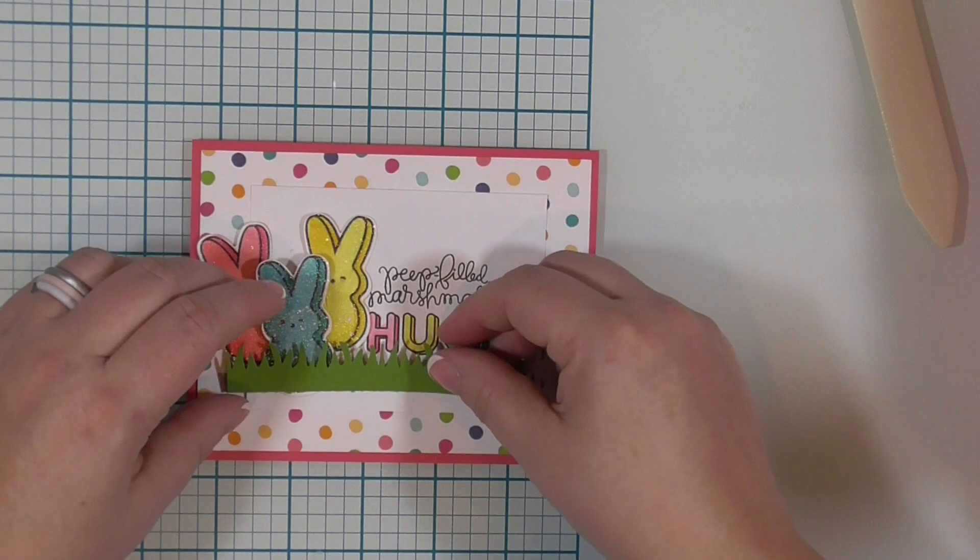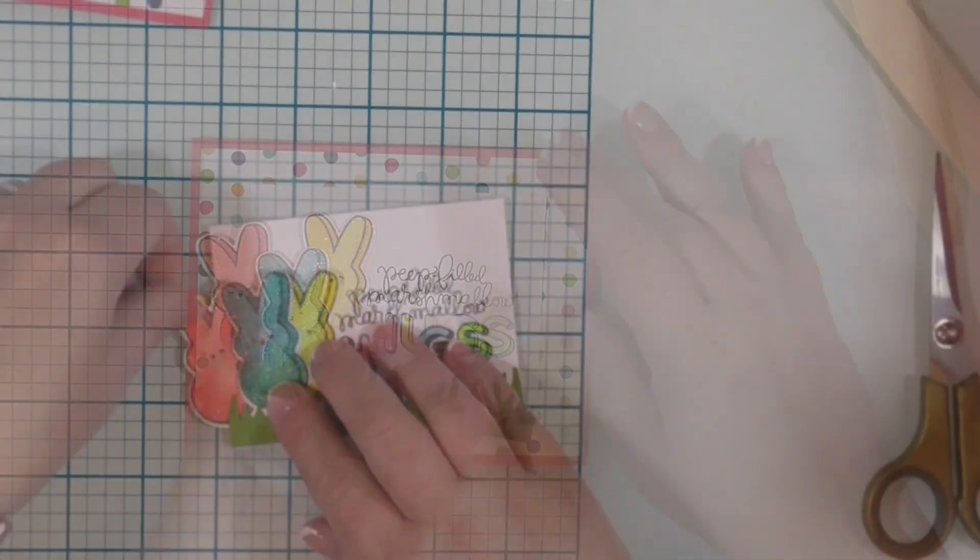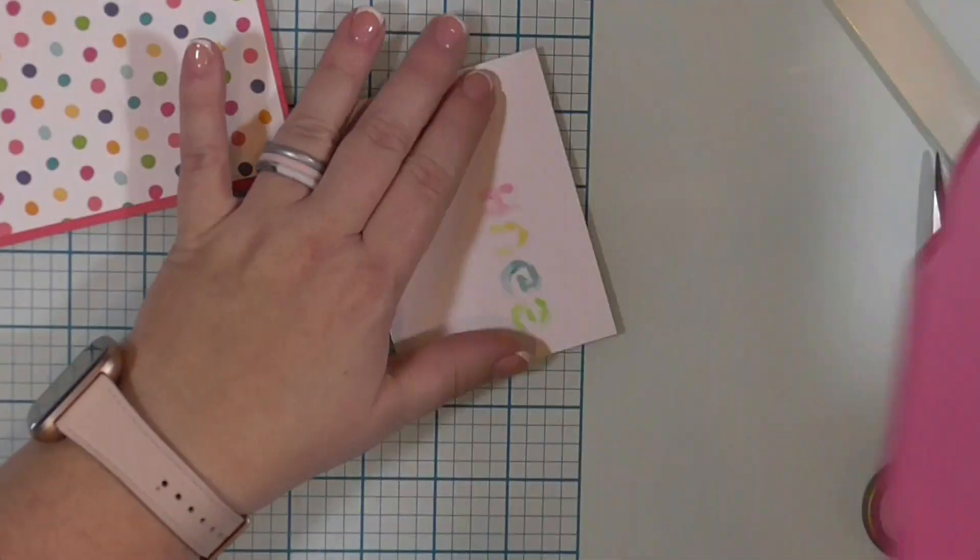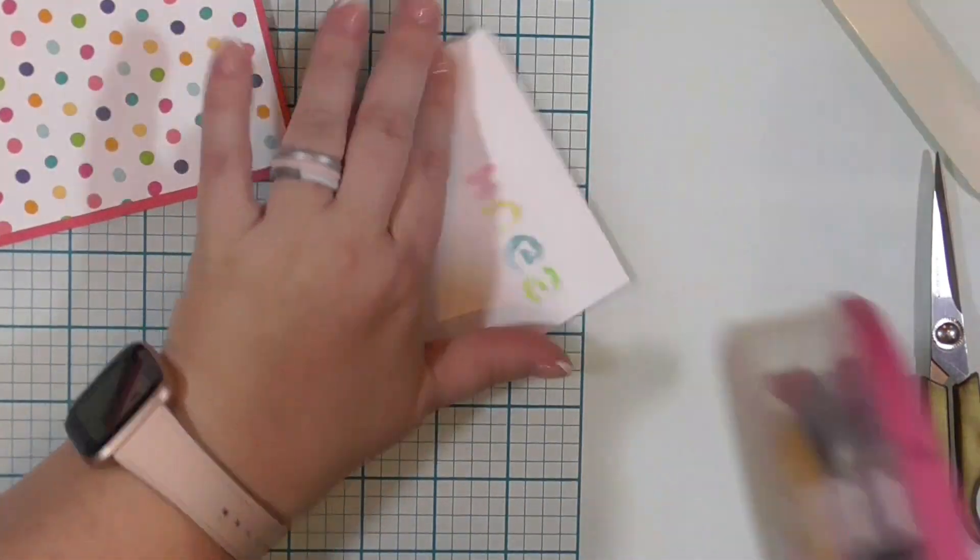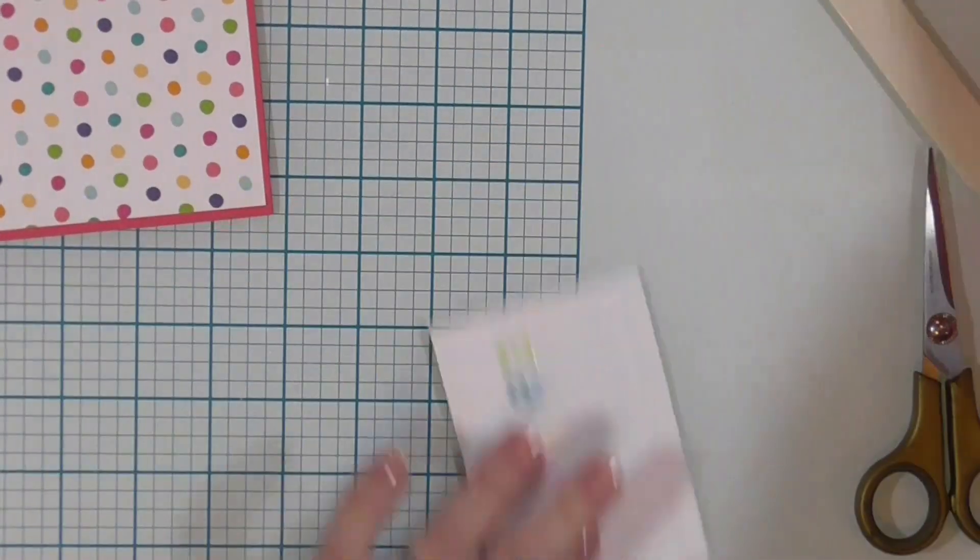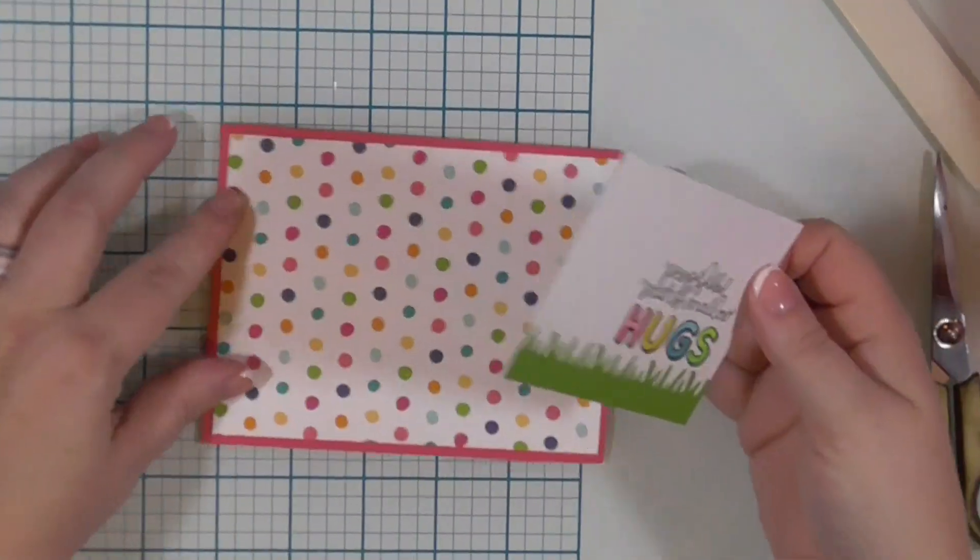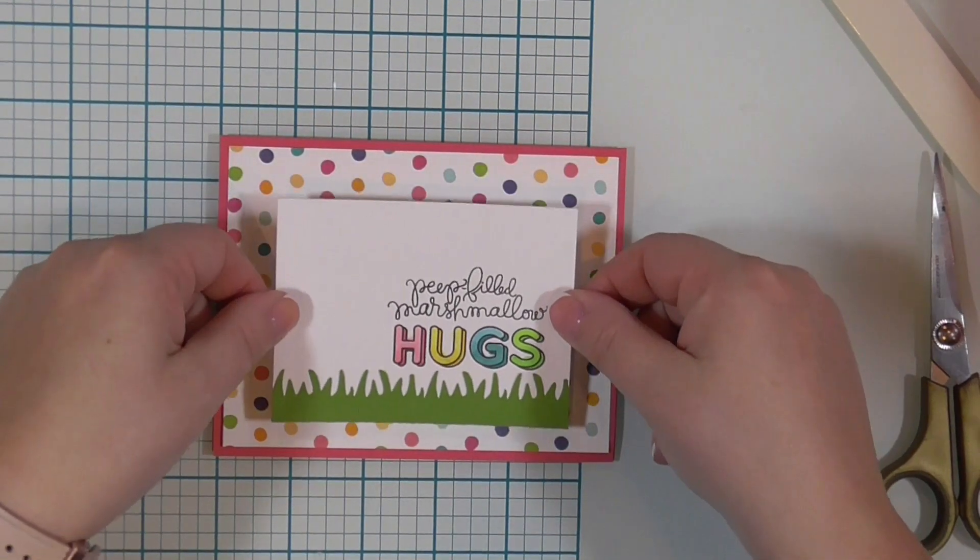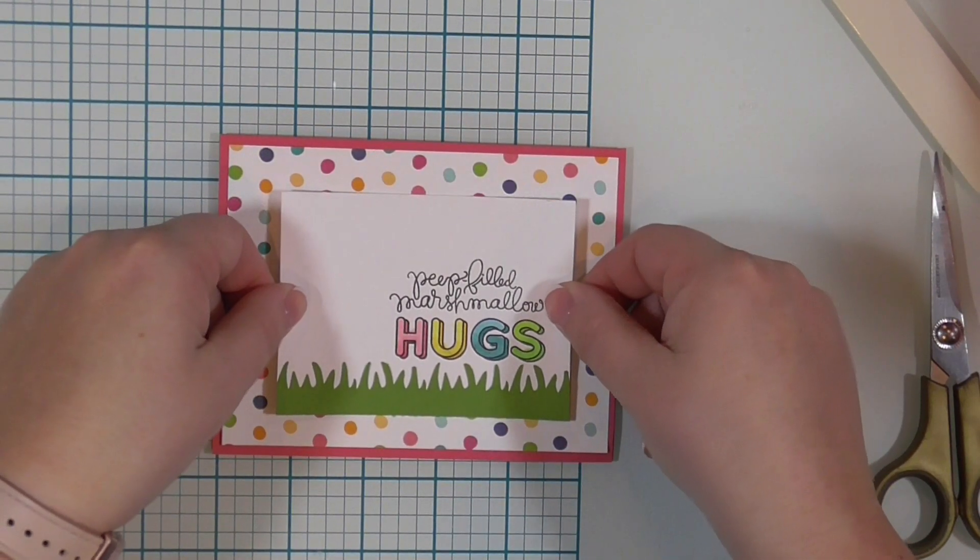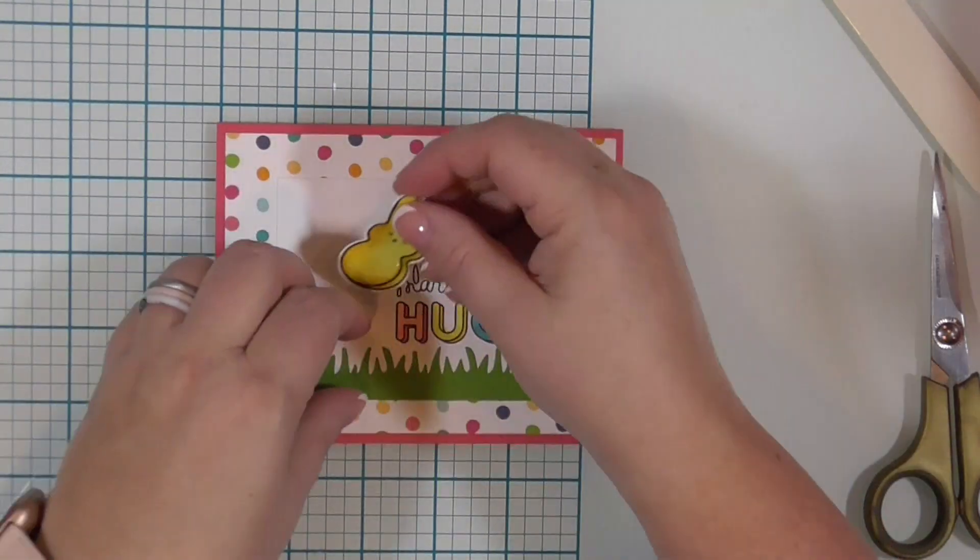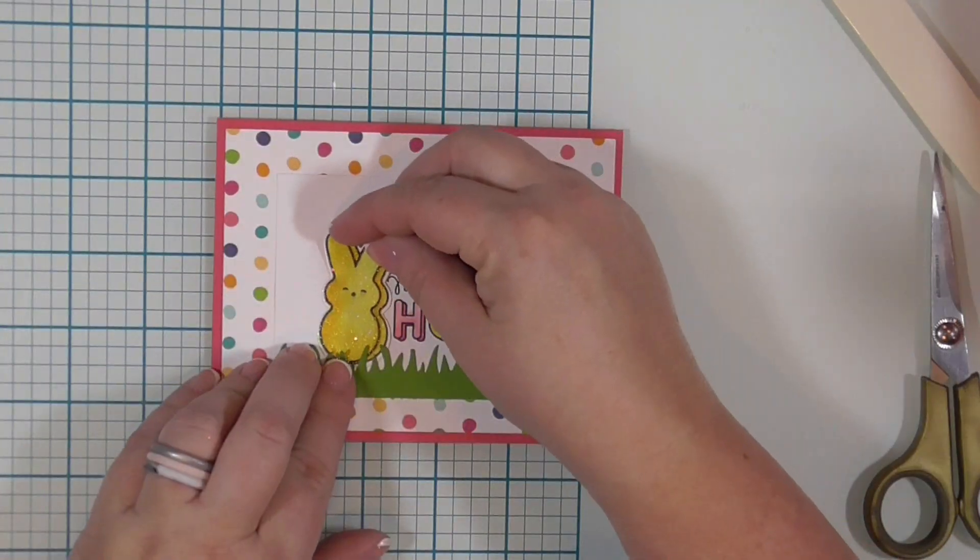However, this is where I mess things up. We'll just go with that. So I have taped the grass that I punched out with that Fiskars punch onto my sentiment piece. And I'm going to adhere this down to the front of my card so that I can arrange my peeps how I want them. Now I want that blue one that's got the winky eye in the front and I want them to be kind of sitting behind the grass. I don't want them to cover up the words.